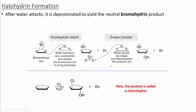In this mechanism, first we form the bromonium ion. Nucleophilic attack occurs when water attacks the bromonium ion in an SN2 process, and then the product is liberated using a proton transfer to deprotonate and form the alcohol. This reaction can also occur with chlorine, where we can form a chlorohydrin as the product.